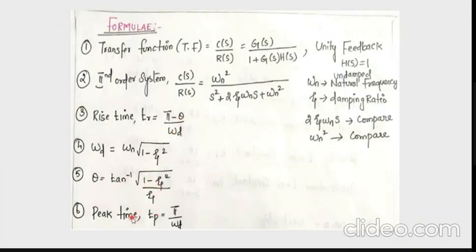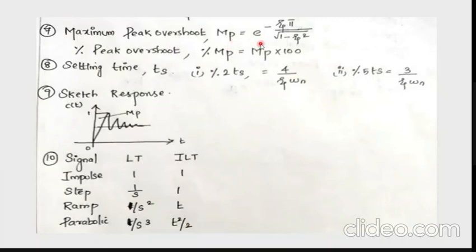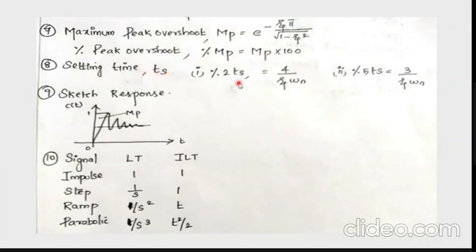The peak time formula is Tp = π / ωd, and maximum peak overshoot Mp = e^(−ψπ / √(1 − ψ²)). The percentage Mp = Mp × 100. For settling time: for 2% error it is 4 / (ψ·ωn), and for 5% error it is 3 / (ψ·ωn).